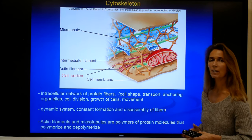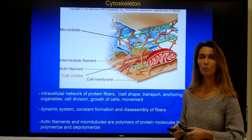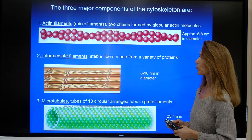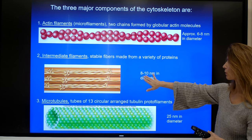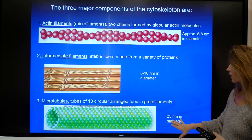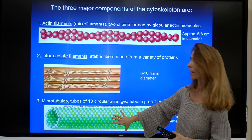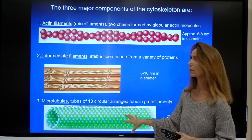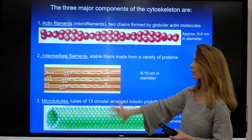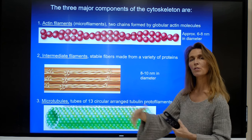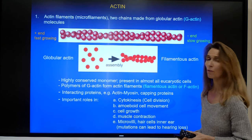Actin filaments and microtubules consist of globular subunits. Looking at the three types of filaments in more detail, they have different sizes. Actin is approximately 6 to 8 nanometers in diameter. Intermediate filaments range between 8 and 10 nanometers, and microtubules are the largest at about 25 nanometers in diameter. Actin filaments and microtubules consist of globular subunits, whereas intermediate filaments consist of a number of different proteins. Intermediate filaments are more stable than actin filaments and microtubules, which are more dynamic and can assemble and disassemble more readily. Each of these filaments plays an important role in the life of a eukaryotic organism.